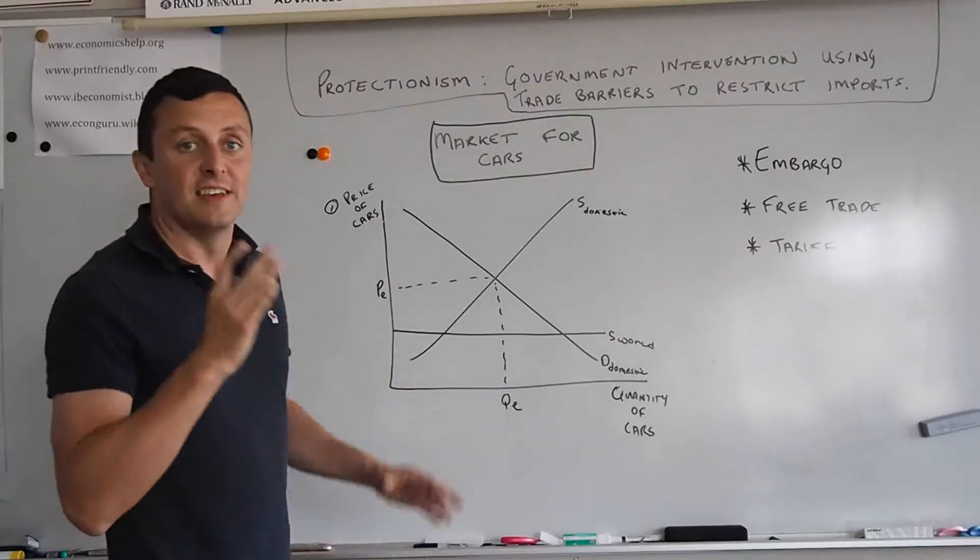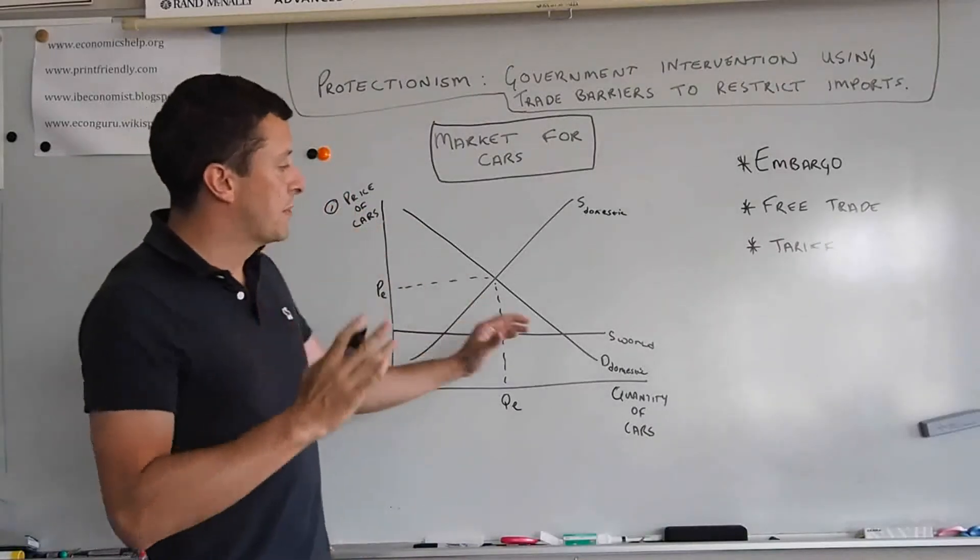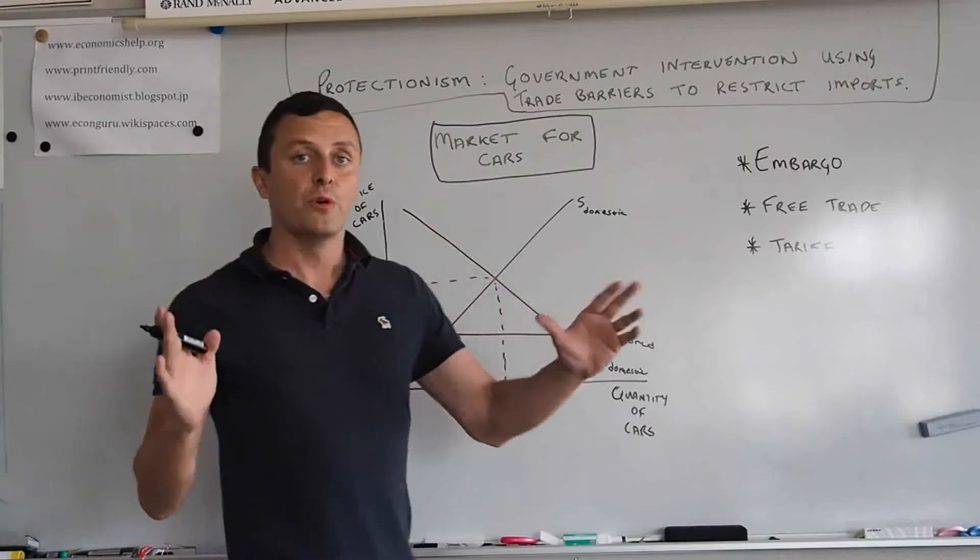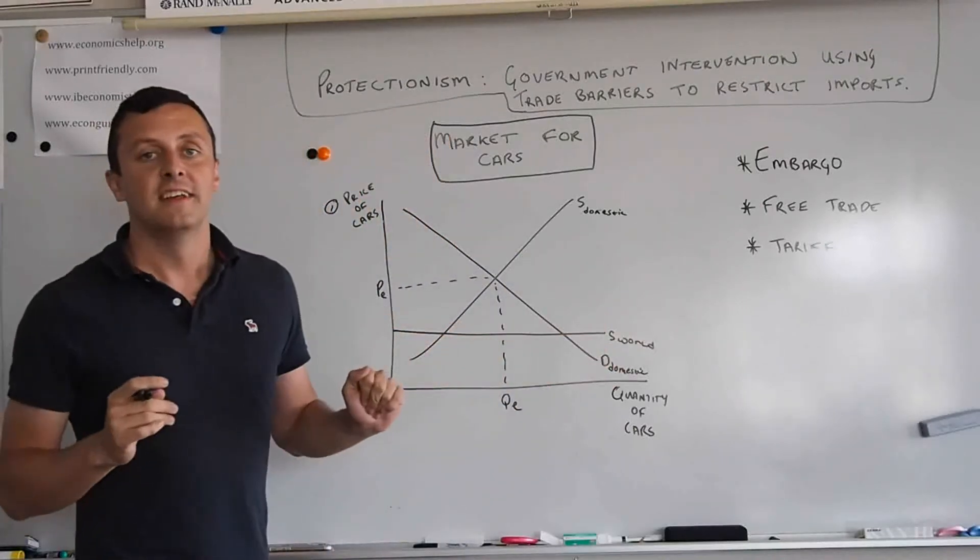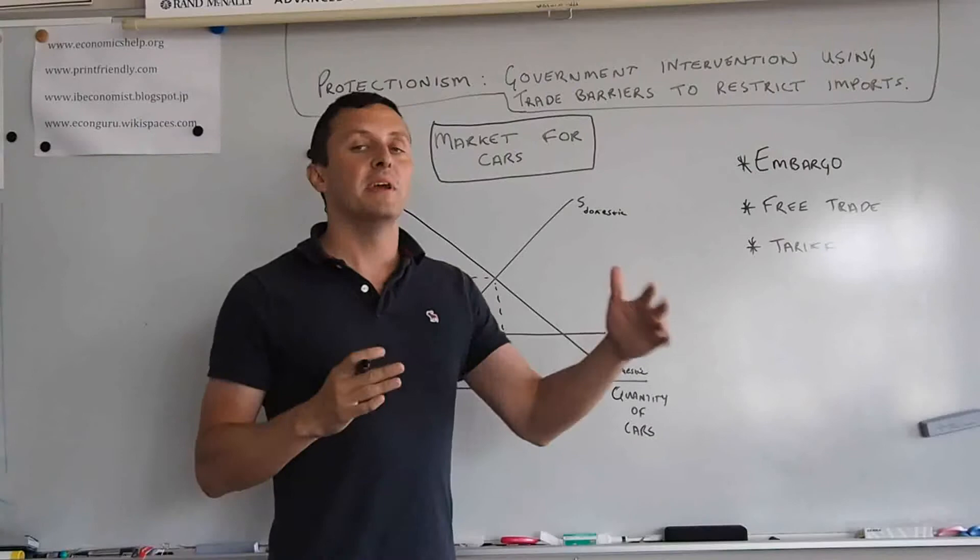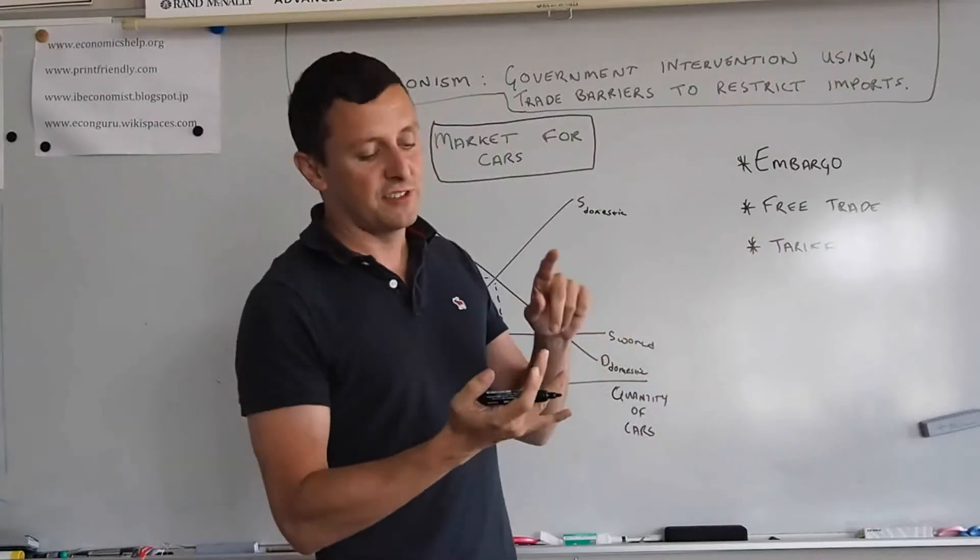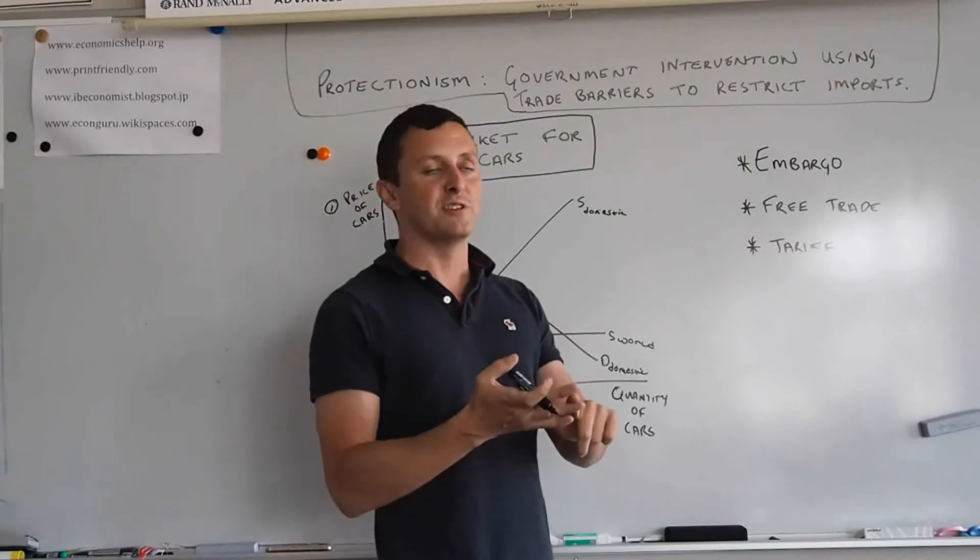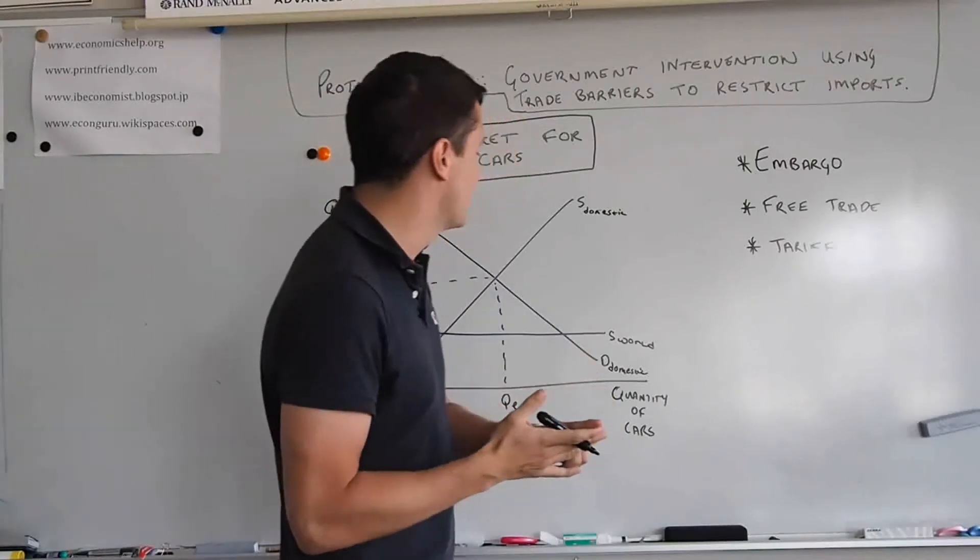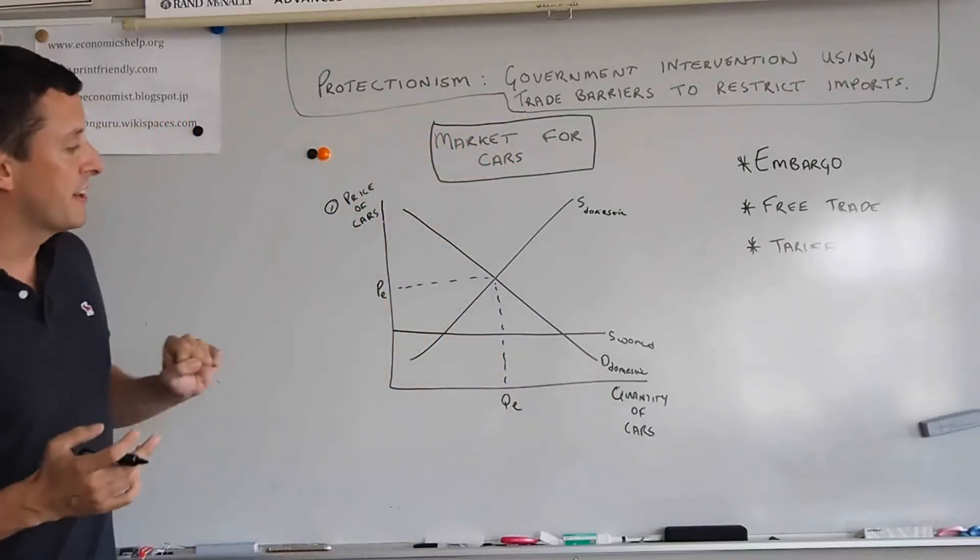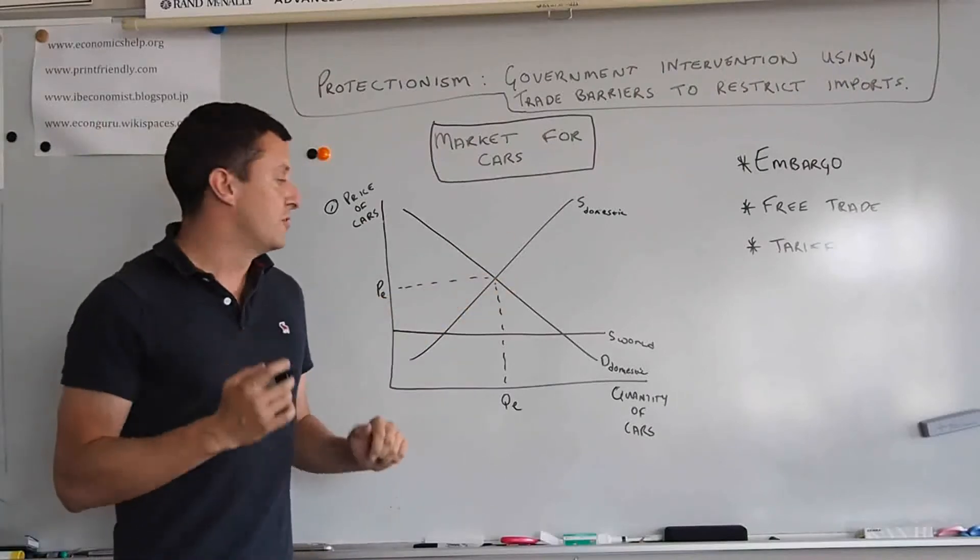The reason for that is if you think about it, the supply of cars in the world market is perfectly elastic. That means that there are many manufacturers of cars around the world. There's American manufacturers, Korean manufacturers, British manufacturers, Japanese manufacturers. And if you open up the market, the world supply would be horizontal.